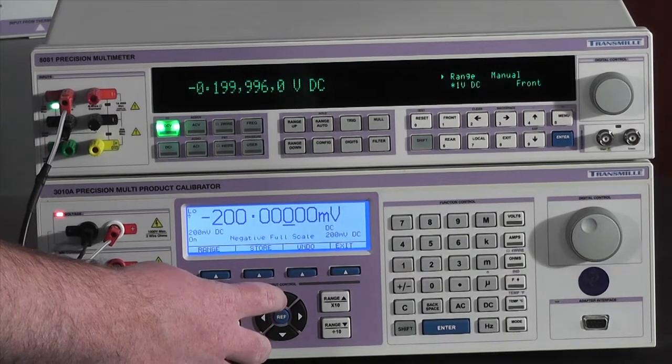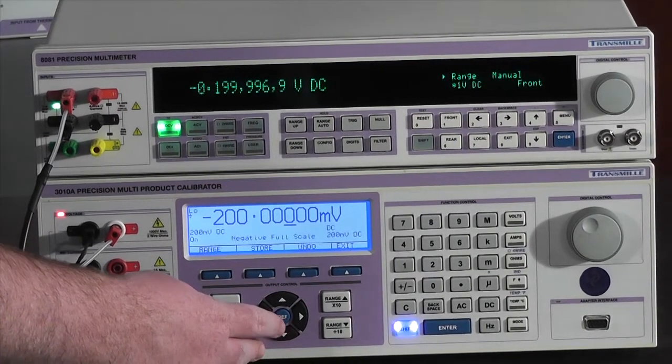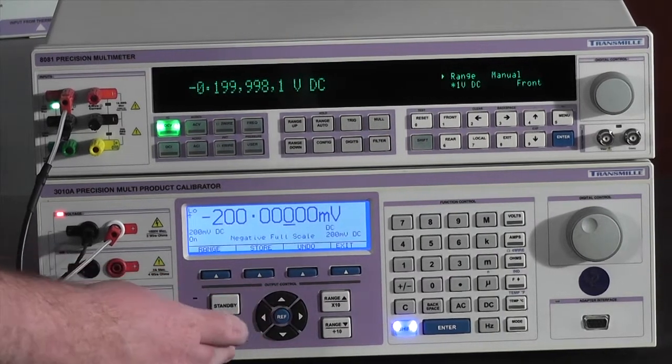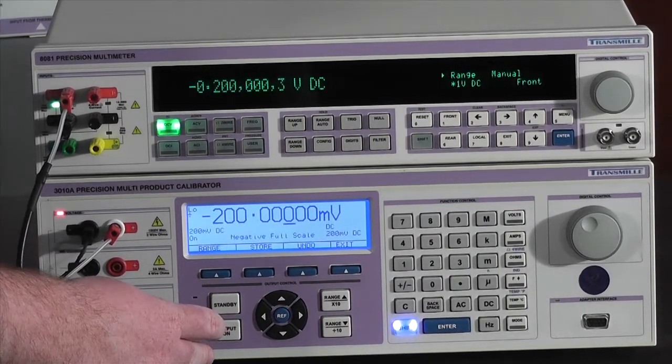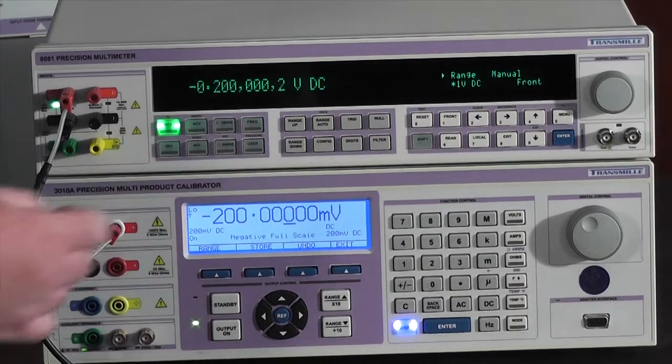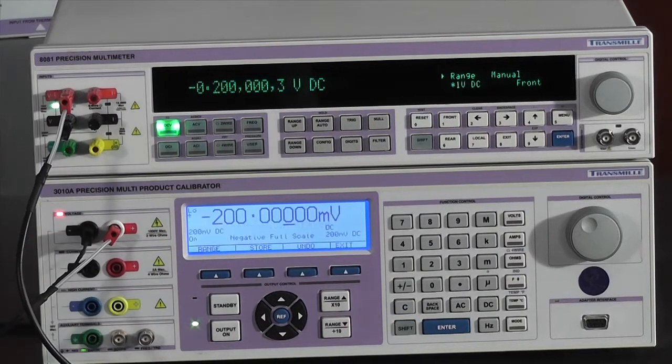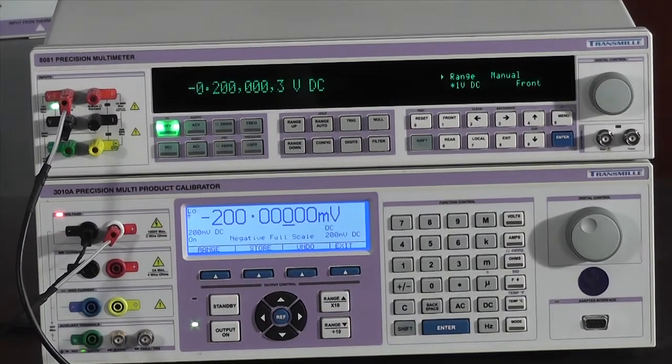Once again, simply adjust whichever way is most convenient until desired value is reached on the screen of your multimeter. Pressing store will store all calibration adjustments.